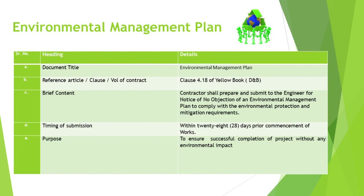The EMP is a comprehensive document that the contractor must prepare and submit to the engineer. This submission requires approval in the form of a notice of no objection, implying that the proposed activities are harmonized with environmental protection norms and mitigation requirements. The EMP must detail how the project will comply with local and international environmental regulations, including waste management, emissions control, and resource conservation, as well as specify actions to minimize the environmental footprint — like controlling runoff, reducing noise pollution, and protecting wildlife habitats.